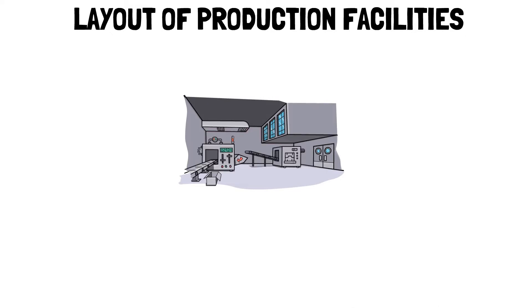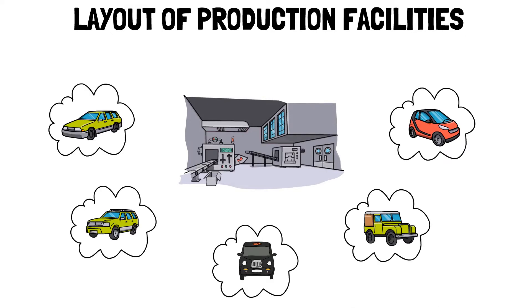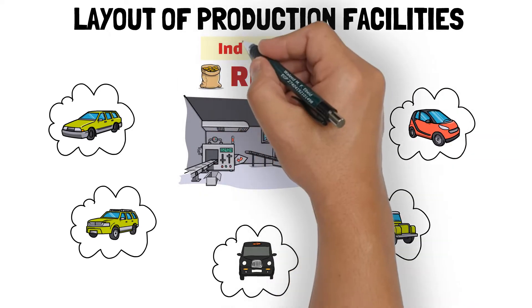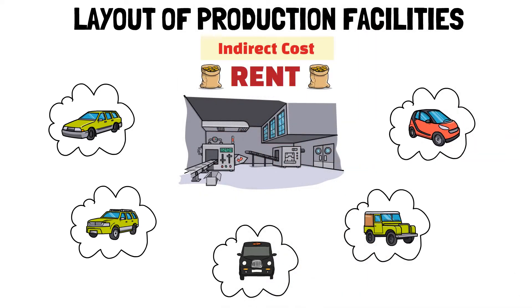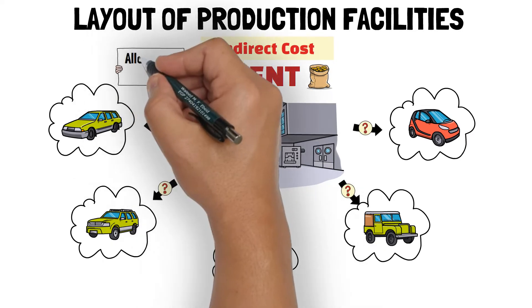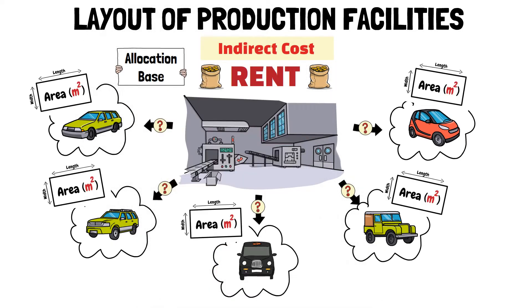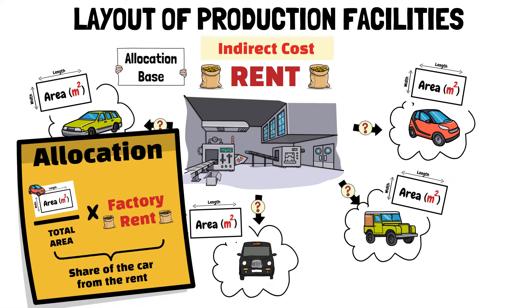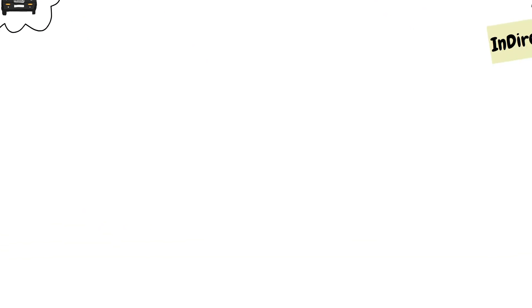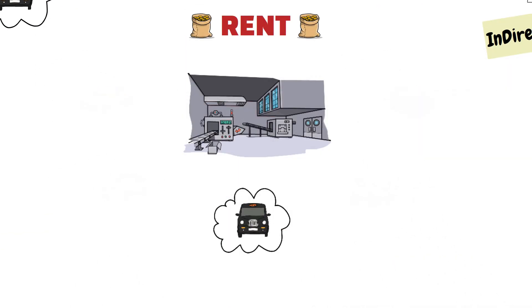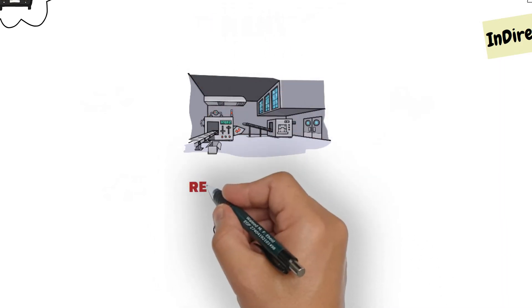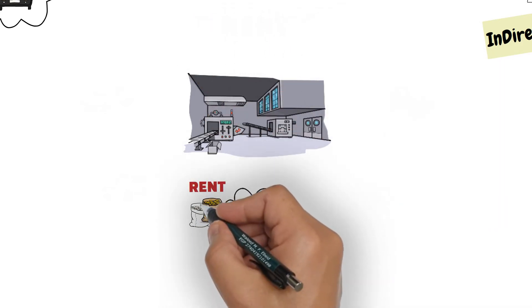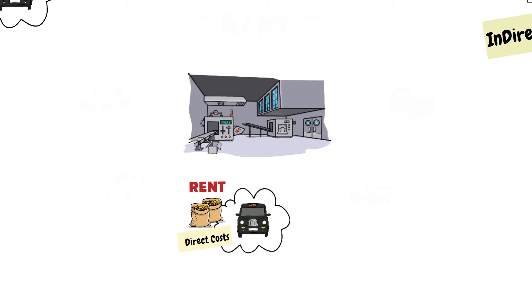Another factor is the layout of the production facilities. If a facility is designed to produce more than one model of cars, then the rent of the facility is an indirect cost to these car models, as you cannot trace the rent cost to each model of the cars produced. You have to figure out an allocation base, like for example the area of the facility used to produce each car model, to calculate the share of each car model from the facility rental cost. But if the facility is designed to produce only one car model, then the rent of the facility is easily traceable to that only car model, and is therefore a direct cost to that car model.